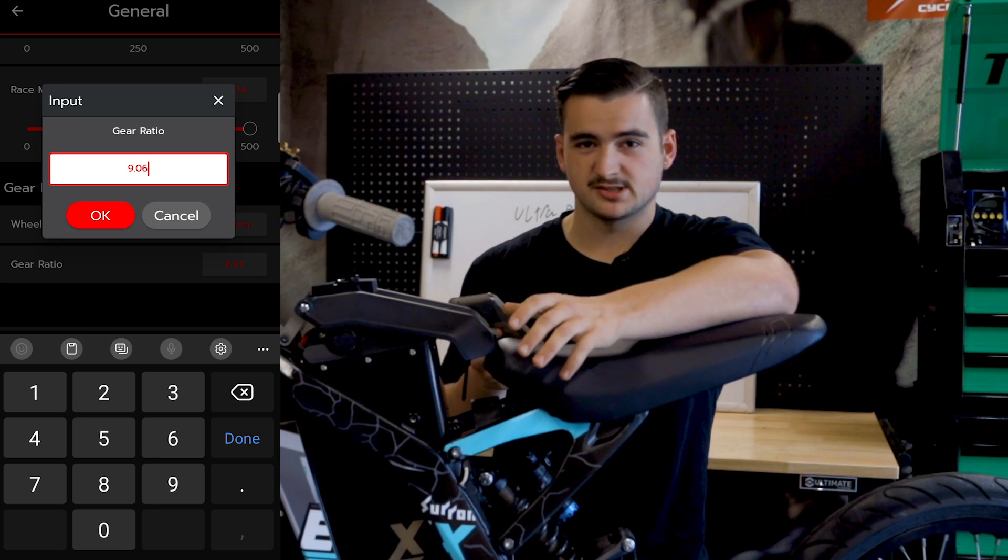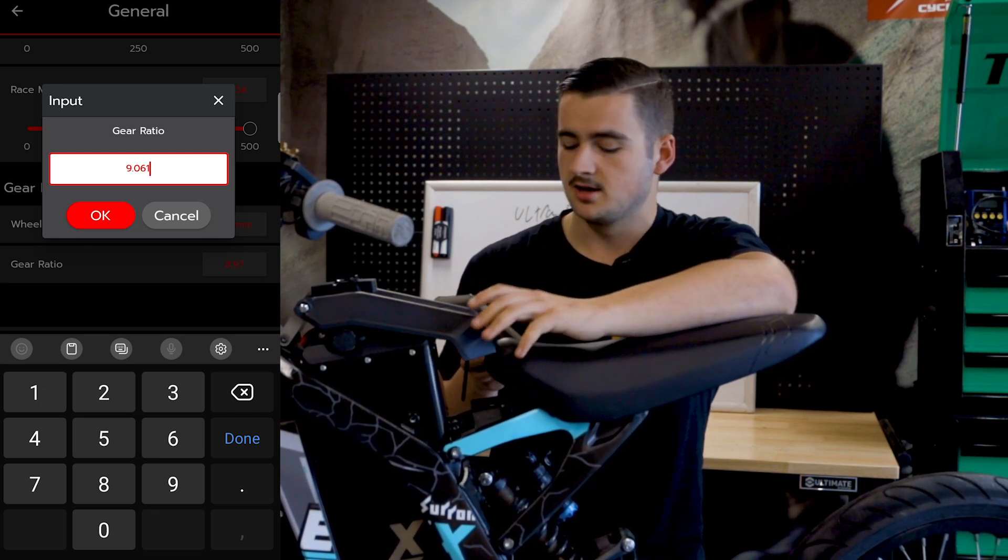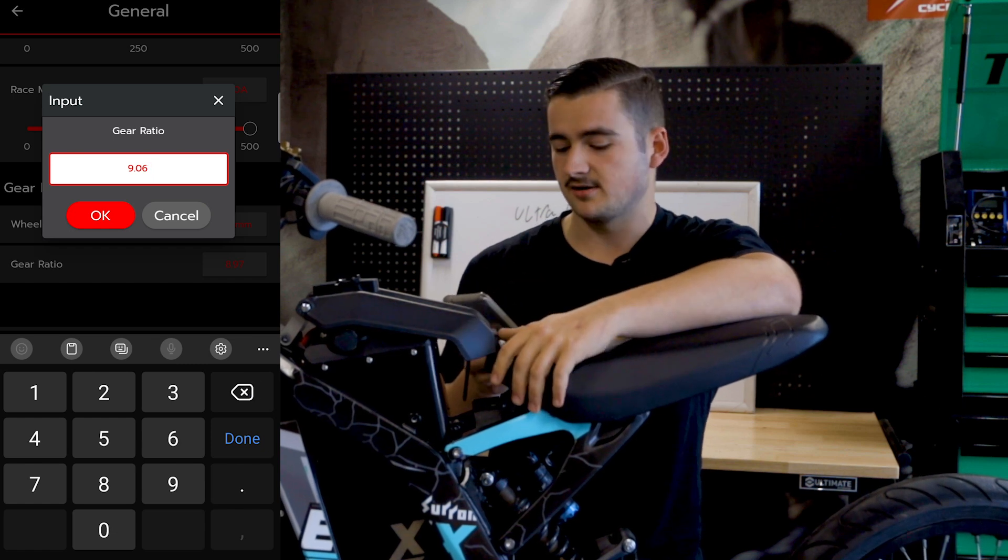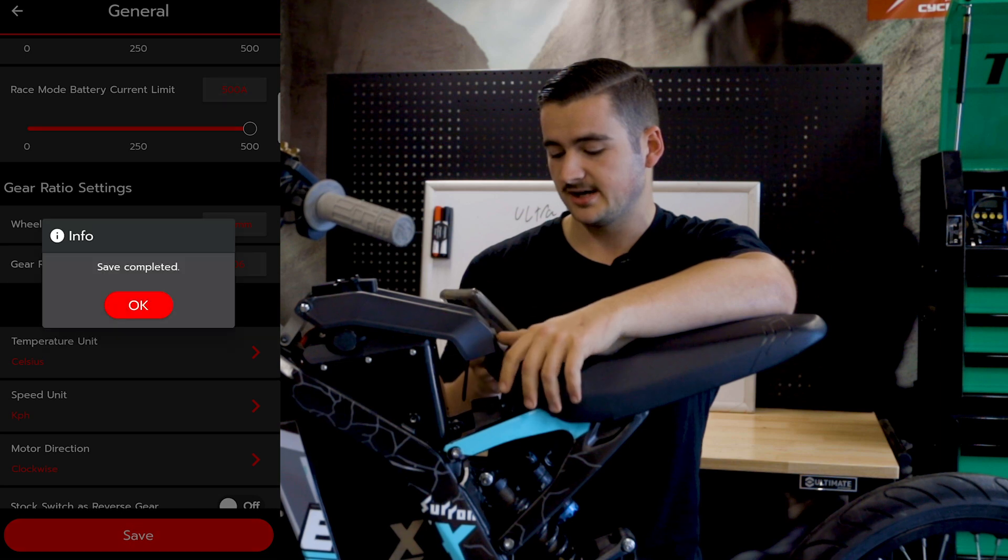Now the Vesk app only wants the first three numbers. It doesn't want it's like one blah blah blah blah. Just give it the first three. So in our case it is 9.06. Press ok. Press save.